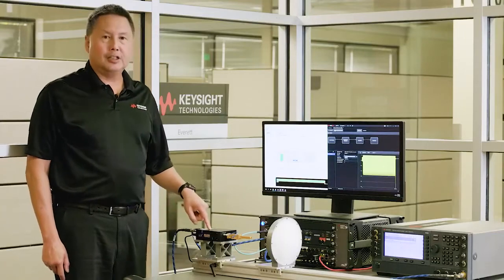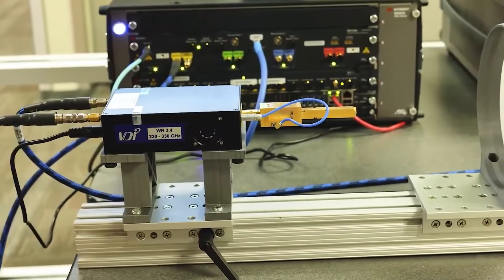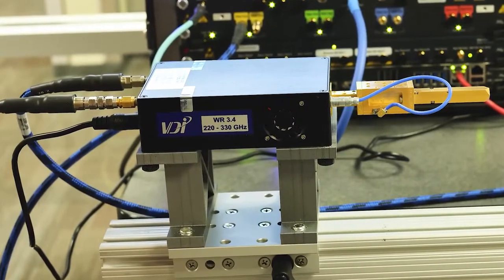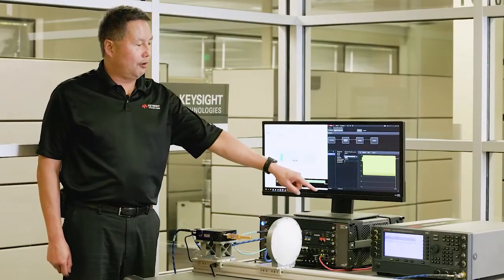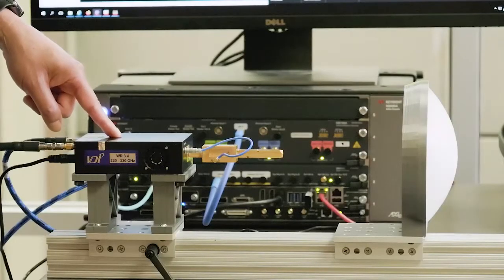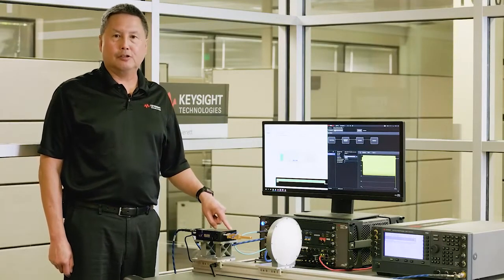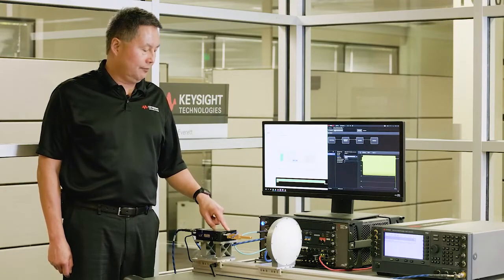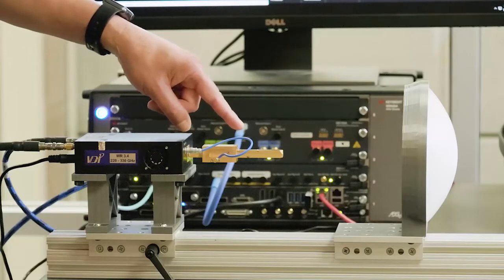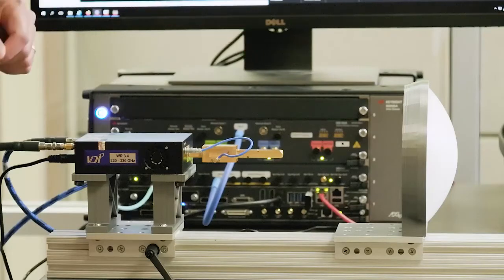The IF is fed into a Virginia Diodes Incorporated, or VDI, upconverter. And this is a WR 3.4 upconverter covering the frequency range of 220 to 330 gigahertz. We're using a PSG to provide the LO. So the LO is routed into the VDI upconverter, where it's multiplied by a factor of 12. The upconverted signal is centered at 285 gigahertz, and then we pass it through a 270 gigahertz high-pass filter from VDI. This is a VDI amplifier, and then we use a diagonal horn antenna to transmit the signal over the air.